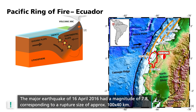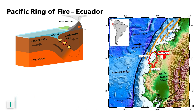The major earthquake of 16th April 2016 had a magnitude of 7.8, corresponding to a rupture size of approximately 100 by 40 kilometers. It occurred as a result of a fast block displacement in the megathrust fault where the Nazca oceanic plate subducts beneath the South American plate. The convergence between both plates shows an eastward direction at a relative velocity of about 6 centimeters per year. Over 600 people died and over 8,000 were injured in this devastating earthquake.